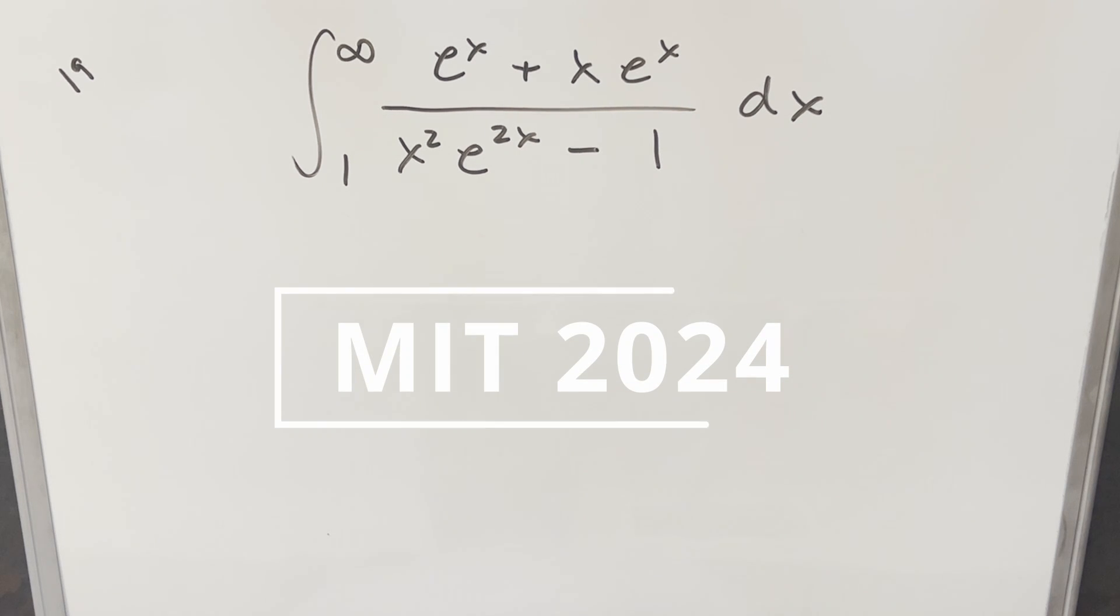Okay, we have here another interesting integral from the MIT Integration Bee 2024, regular season 19. We have the integral from 1 to infinity of (e^x + xe^x) / (x²e^(2x) - 1) dx.